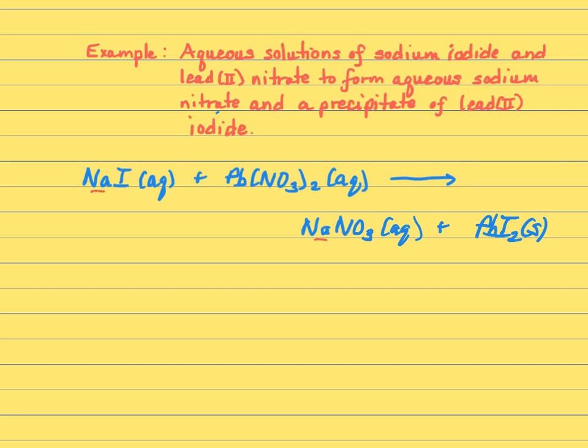So the Na's look okay. The Pb's look okay, but I've got one I here and two I's here. So I'm going to put a two here, but now I need two in front of this Na. And now I have two NO3's. It's easier to think of polyatomic ions as one thing, two NO3's, and I've got two NO3's. So I'm actually all balanced.